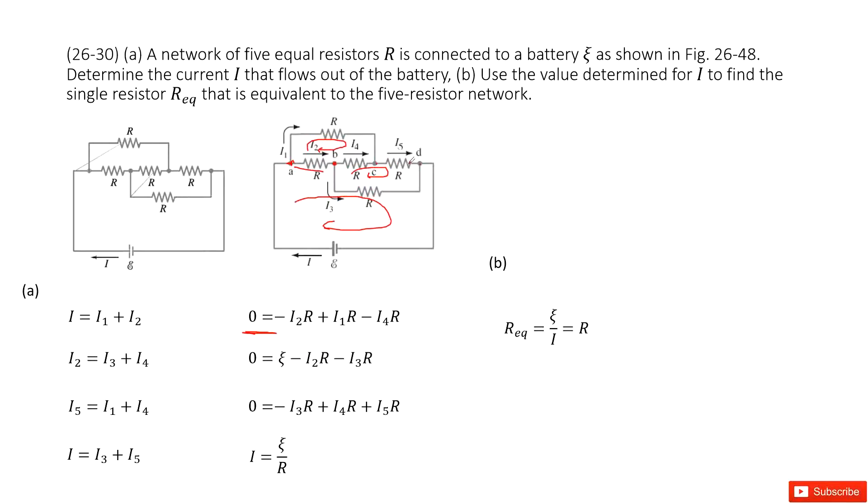The next one, we look at this loop. For this loop, we can see, so first one, this I3, right? So we go through this way. Go through this way. So this is negative I3, right? So negative I3 times R plus I4 times R plus I5 times R.